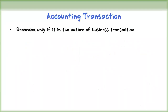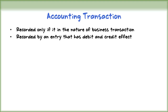In this video, we will see how to analyze and journalize transactions. Every transaction is recorded only if they are in the nature of a business transaction. Under the double entry system, every business transaction is recorded by an entry that has debits and credits effects on specific accounts. This double entry procedure keeps the accounting equation in balance.